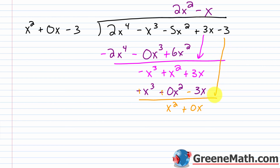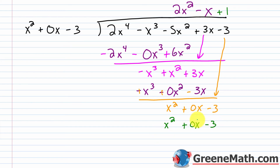Bring down negative 3. Leading term: x squared over x squared is 1, so plus 1 up top. Multiply: 1 times x squared is x squared; 1 times 0x is 0x; 1 times negative 3 is minus 3. Subtracting the same thing from itself: x squared minus x squared is 0; 0x minus 0x is 0; negative 3 plus 3 is 0. So 2x squared minus x plus 1 is our answer.